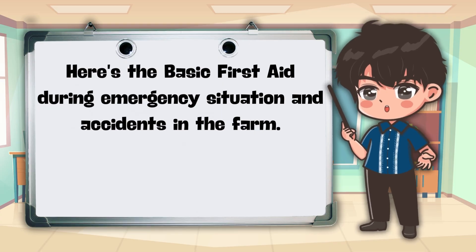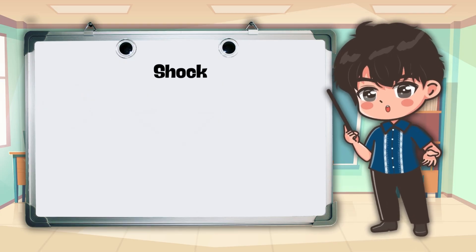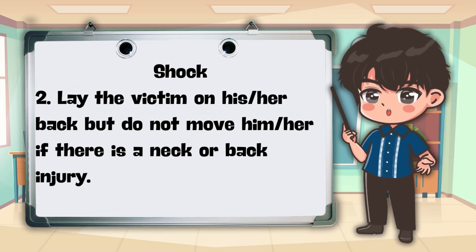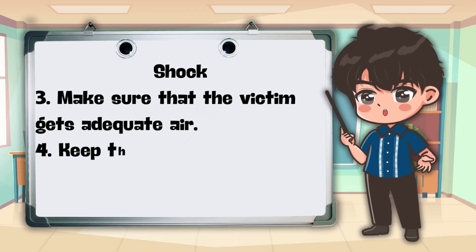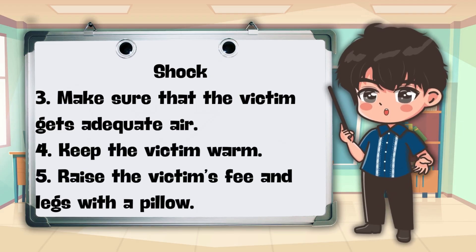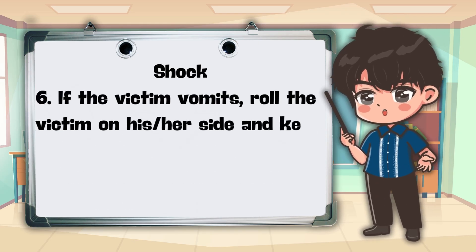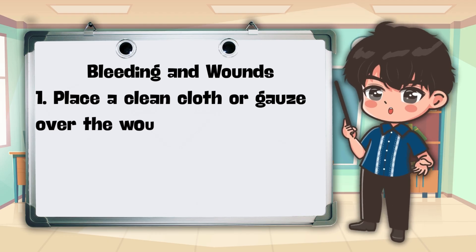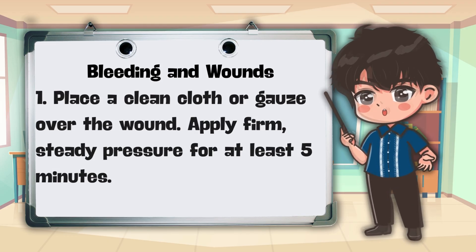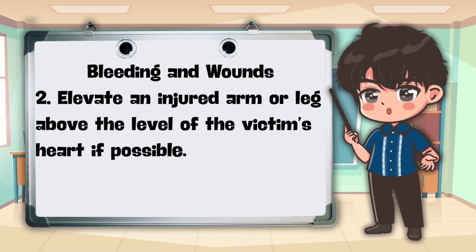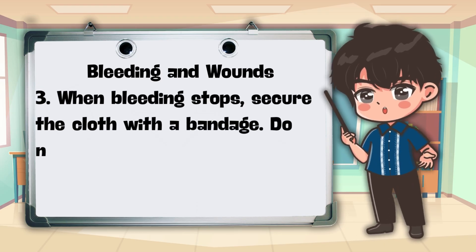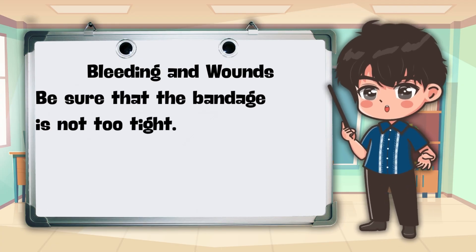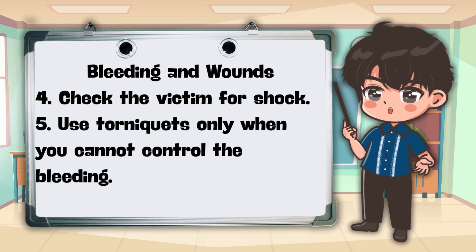Here's the basic first aid during emergency situations and accidents in the farm. For shock: do not give the victim anything to eat or drink; lay the victim on their back but do not move them if there is a neck or back injury; make sure the victim gets adequate air; keep the victim warm; raise the victim's feet and legs with a pillow; if the victim vomits, roll them on their side and keep the windpipe clear. For bleeding and wounds: place a clean cloth or gauze over the wound and apply firm, steady pressure for at least 5 minutes; elevate an injured arm or leg above the level of the victim's heart if possible; when bleeding stops, secure the cloth with a bandage without lifting it to check; ensure the bandage is not too tight; check the victim for shock; use tourniquets only when you cannot control the bleeding.